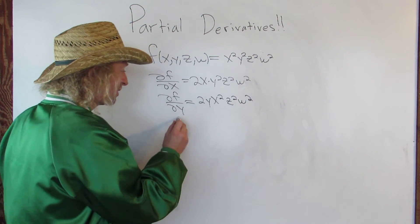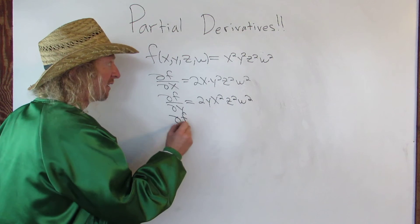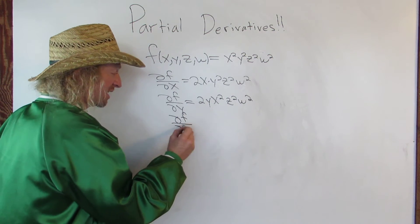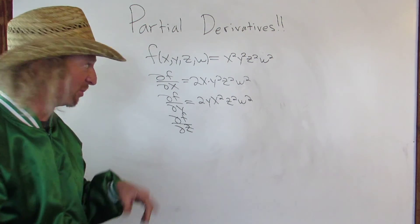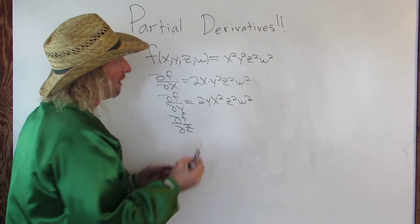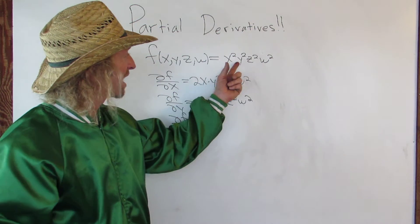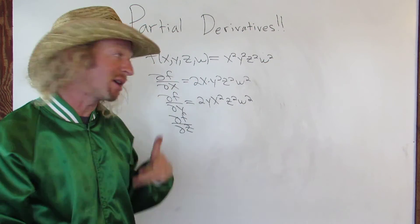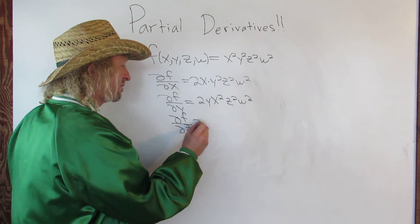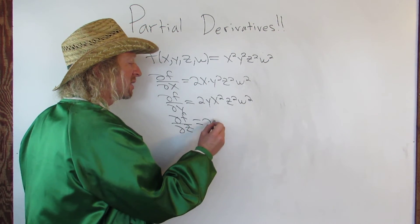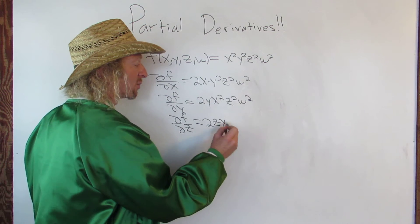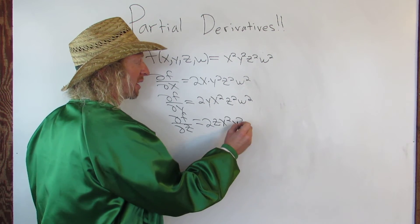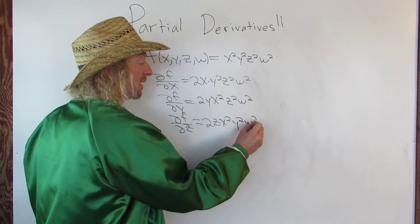Let's do del f del z — yeah, you can do that with all the variables. So x squared, y squared, and w squared are constants. You just get 2z, and then x squared, y squared, w squared hang out.